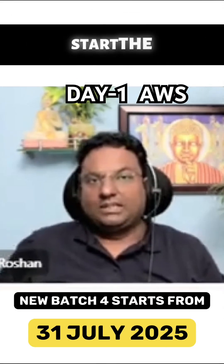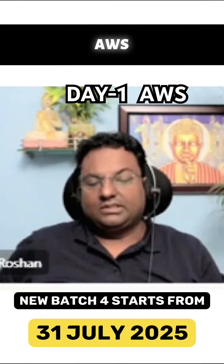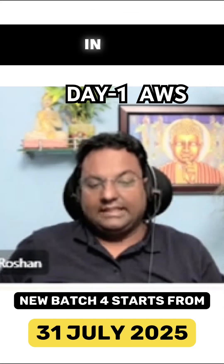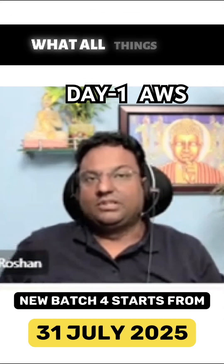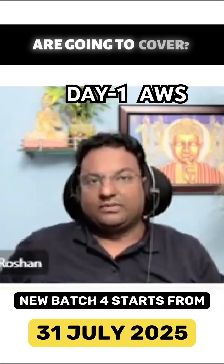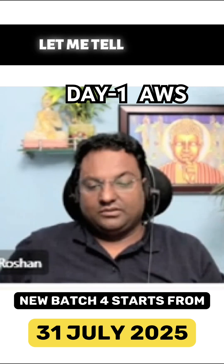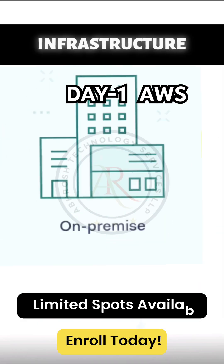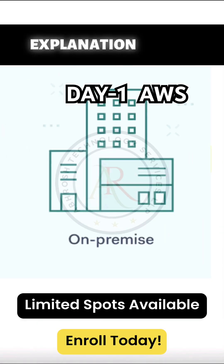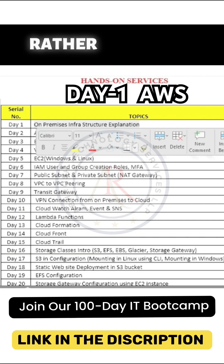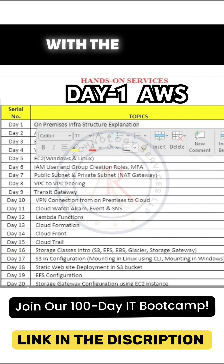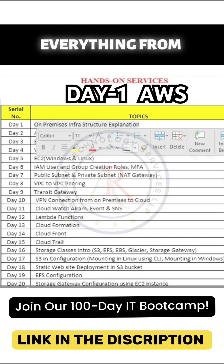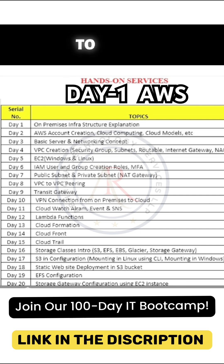Today we are going to start the AWS. Let me tell you what all things we are going to cover: on-premises infrastructure explanation, which you need to understand — why we are migrating everything from on-prem to cloud.